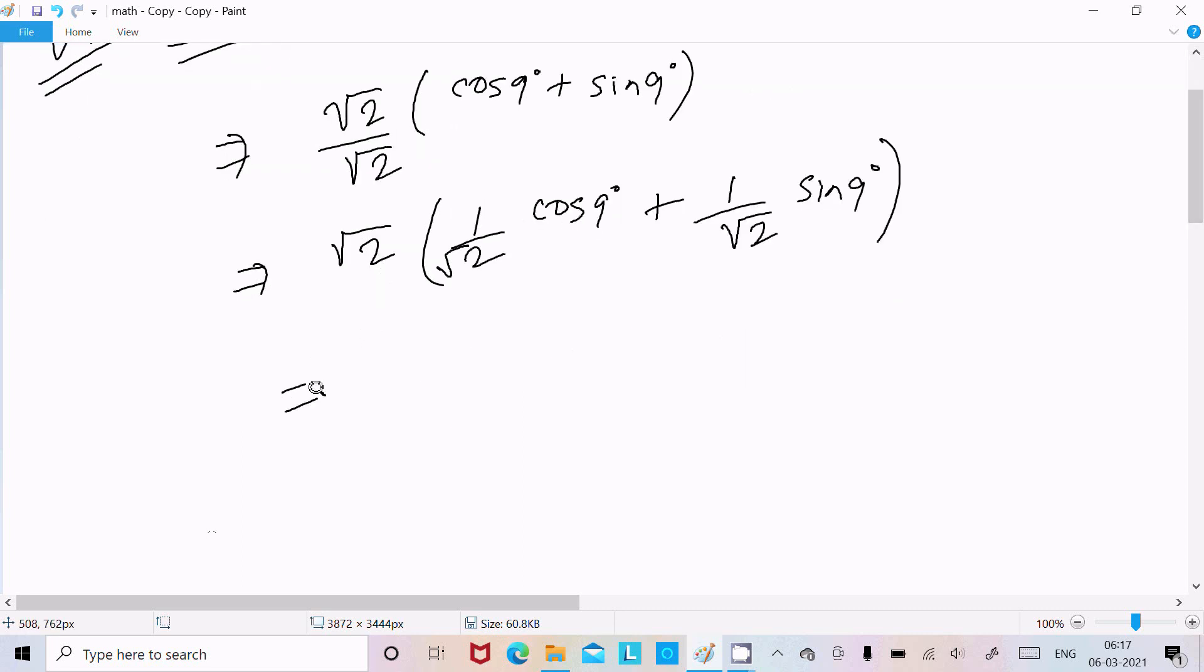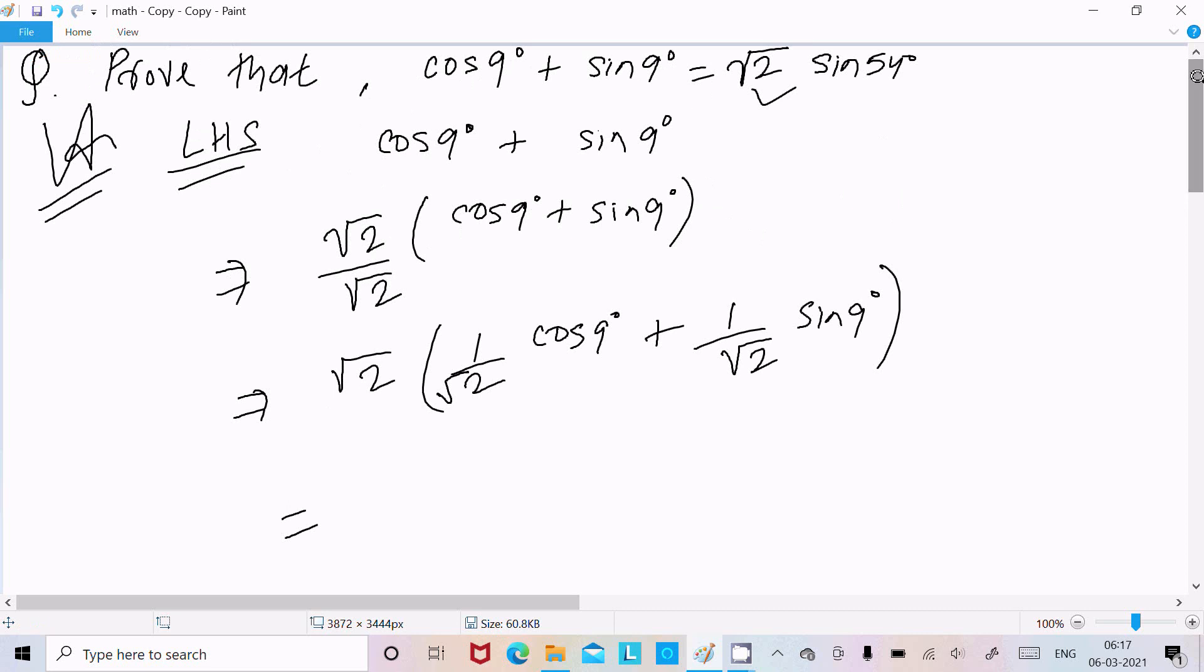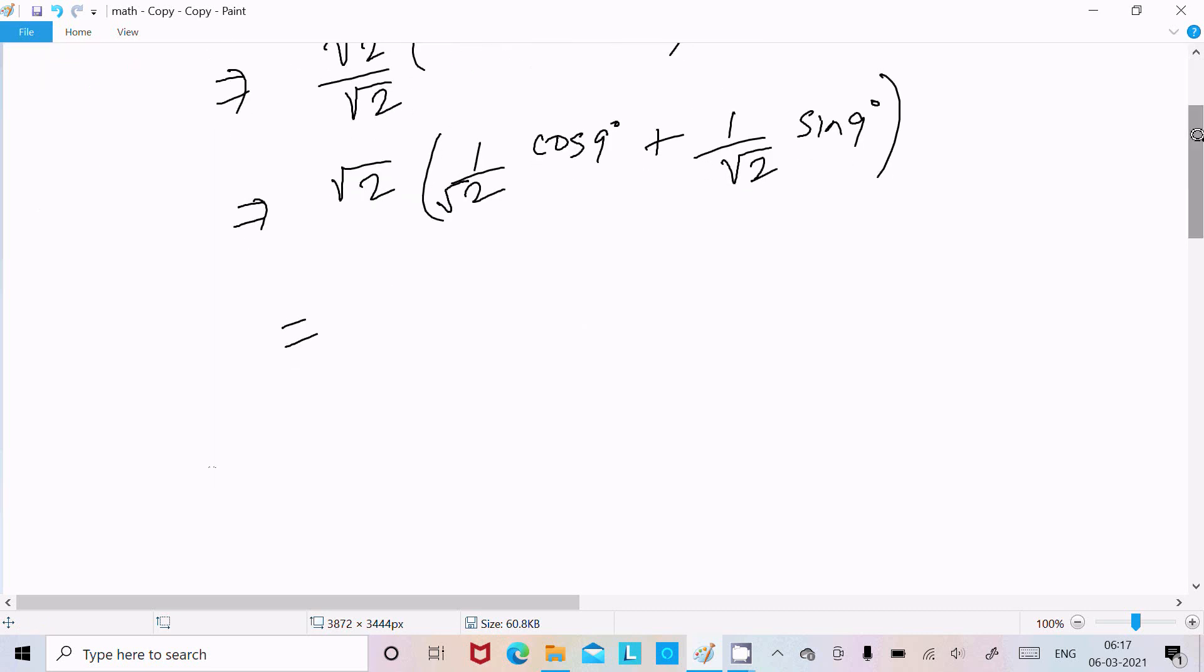Now the value of 1/√2, so we can write this place here sin 45° is the √2 value.